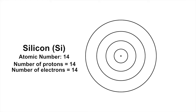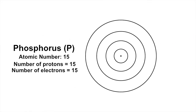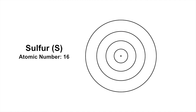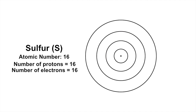Silicon has 14 electrons, 2 in the first shell, 8 in the second shell, and 4 in the third shell. Phosphorus has 15 electrons, 2 in the first shell, 8 in the second shell, and 5 in the third shell. Sulfur has 16 electrons, 2 in the first shell, 8 in the second shell, and 6 in the third shell.